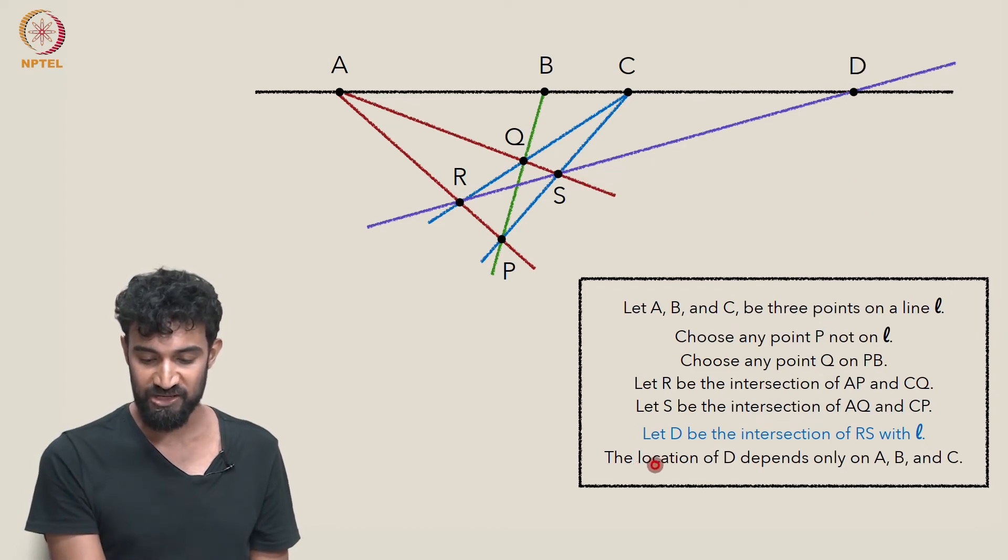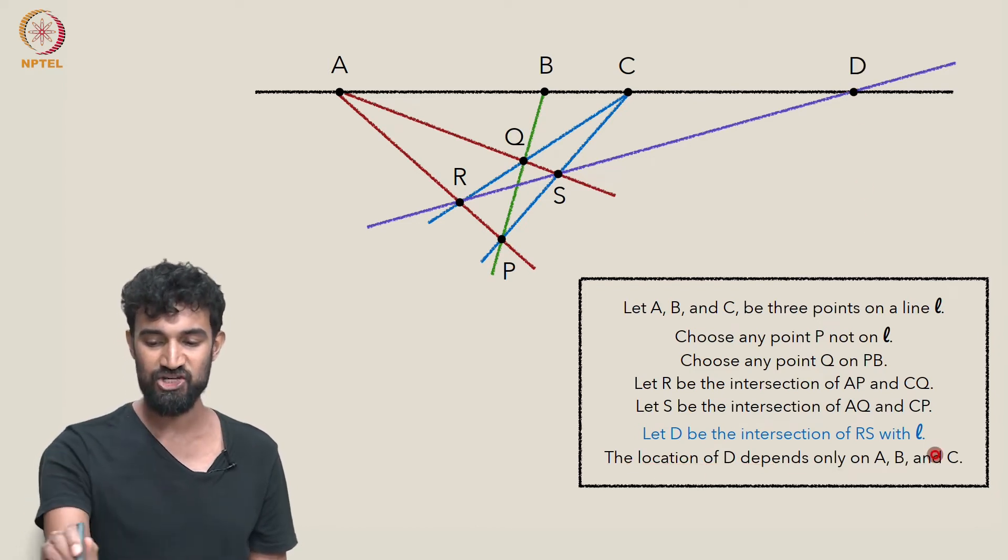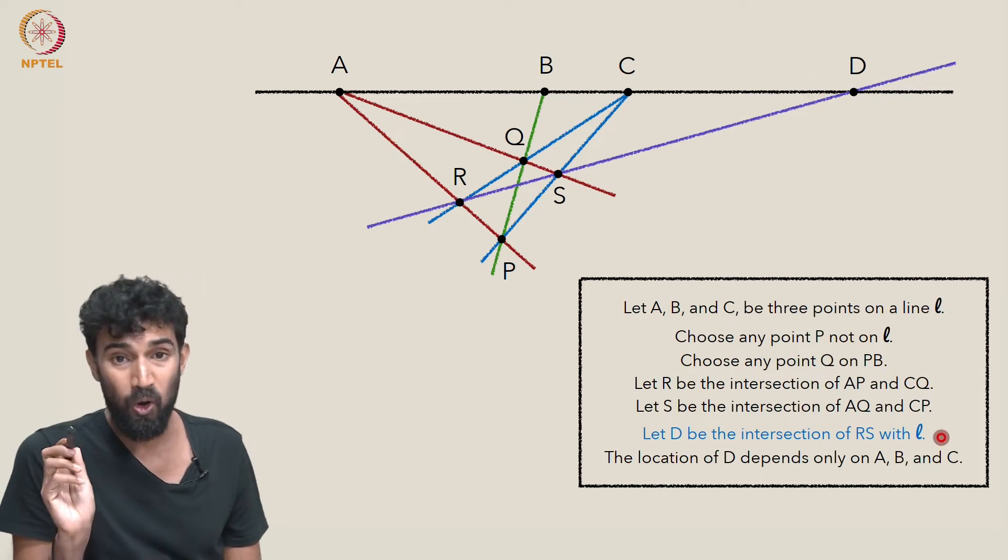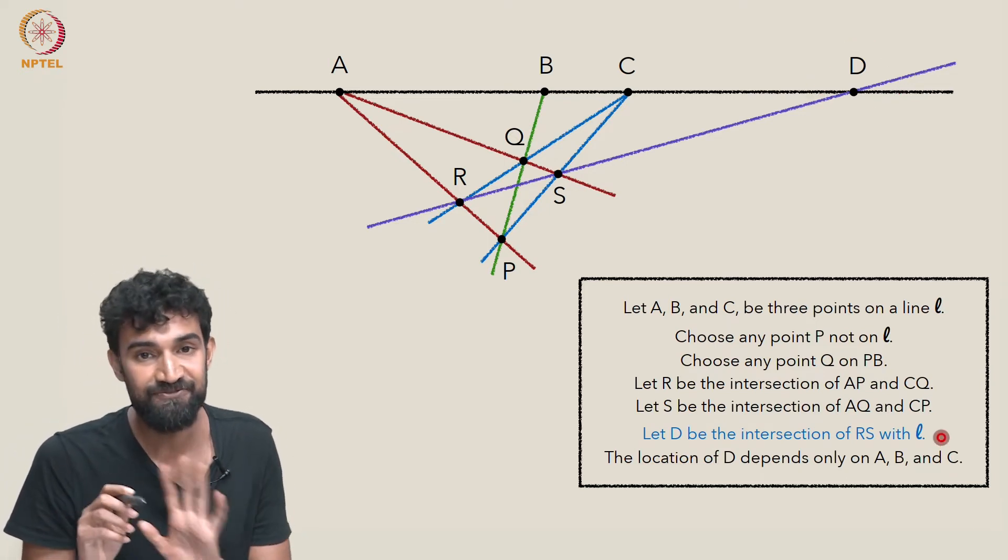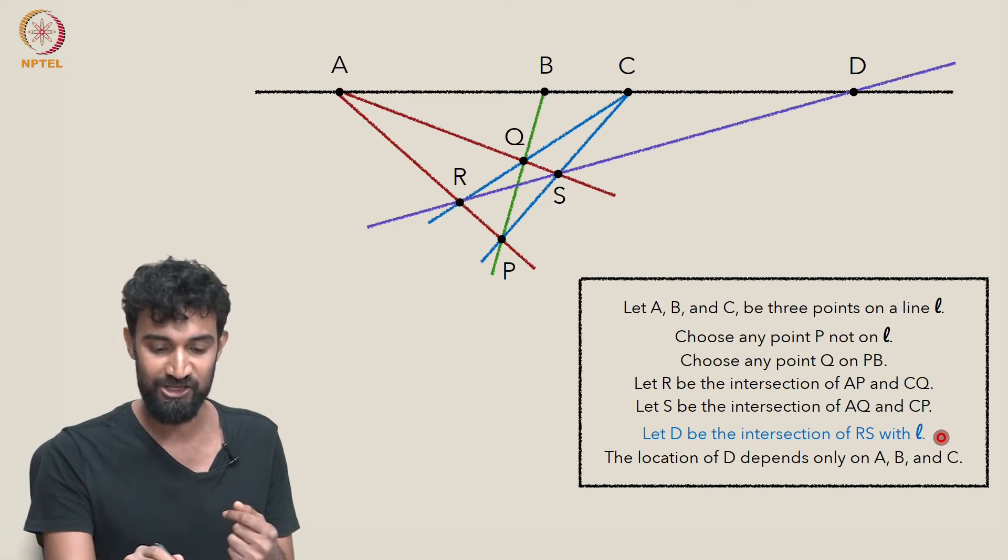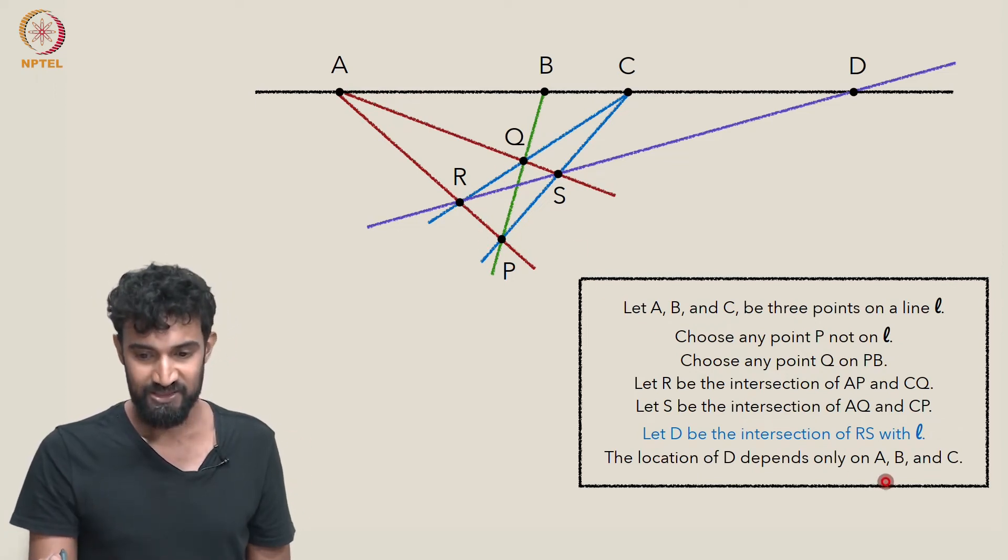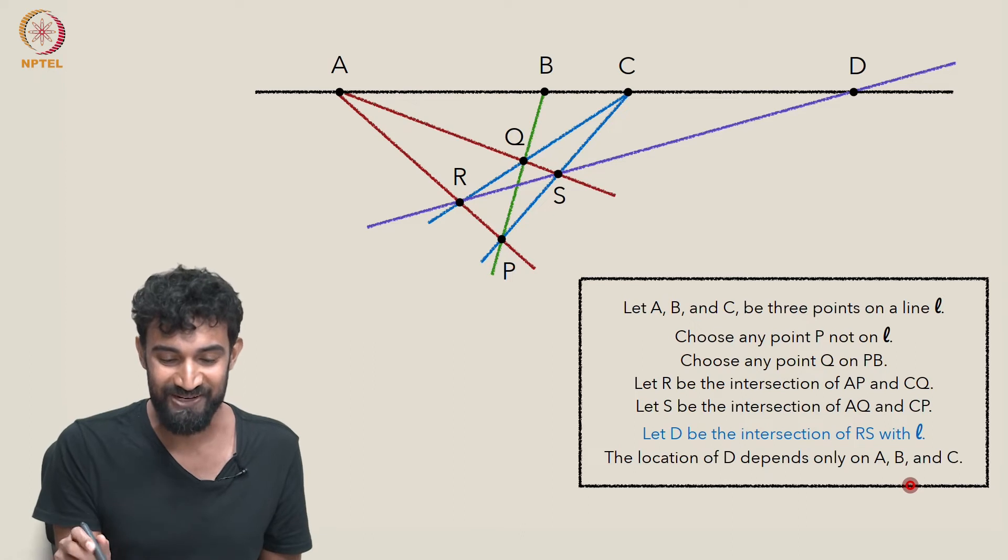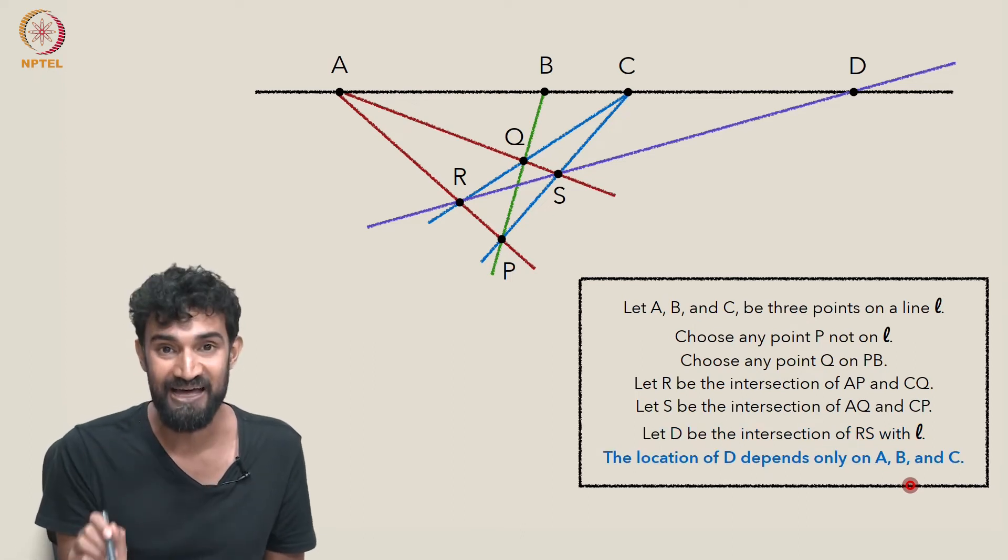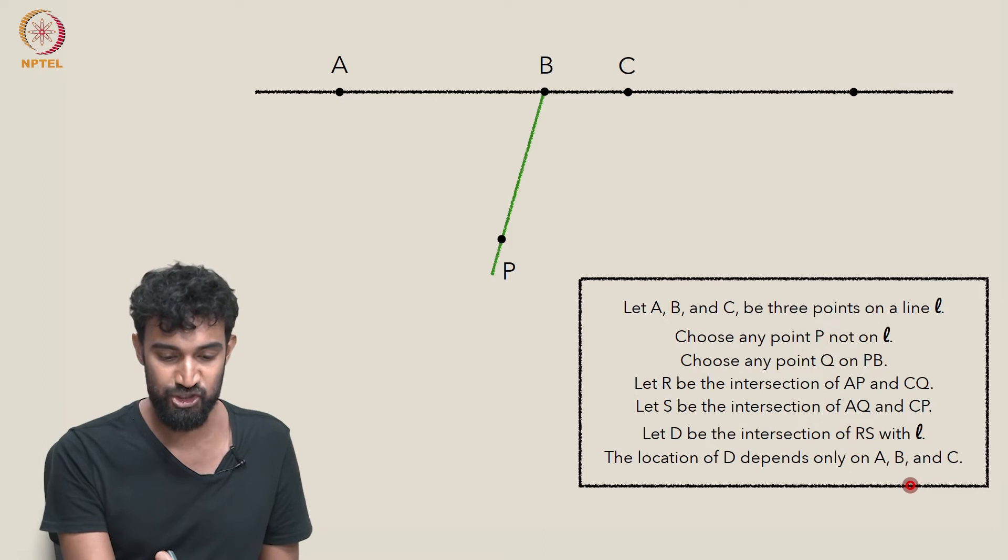So now the location, the claim is this location of D depends only on A, B, and C. It's fully independent of the choices I made in choosing P and Q. So you don't have to take my word for it. Let's see it in action.